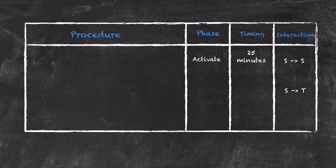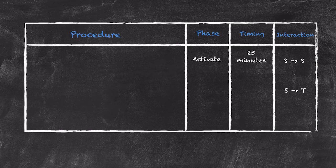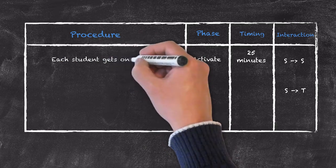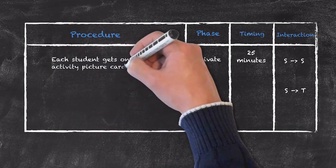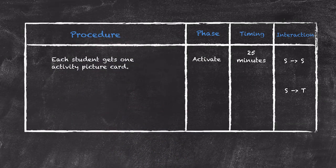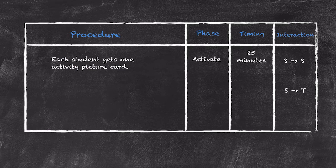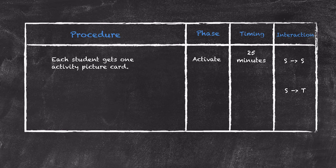So an example here: each student is going to get an activity picture card, and on there will just be a simple cartoon type picture showing some form of action taking place. So for example it may show someone fishing, it may show someone playing football and so on and so forth.